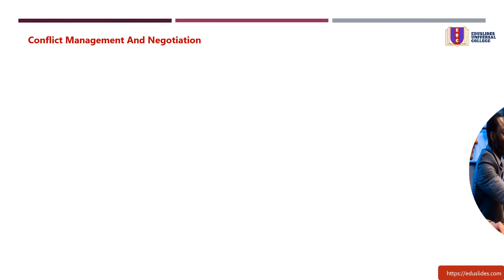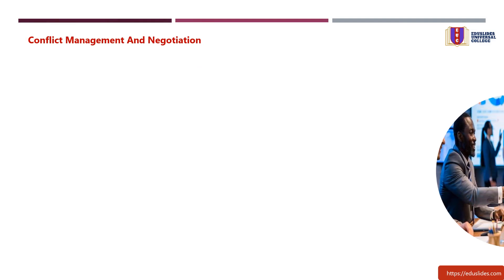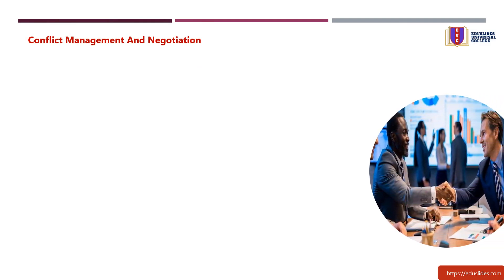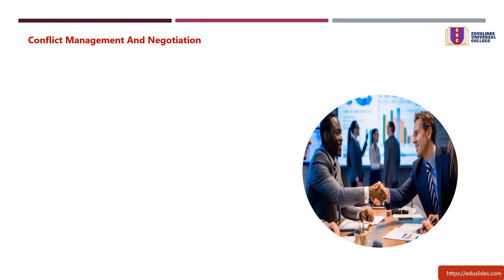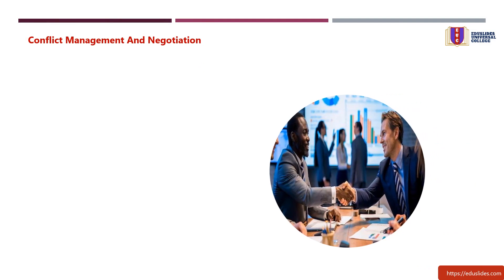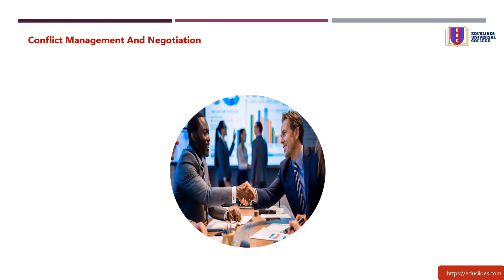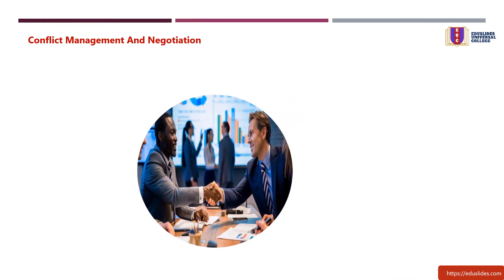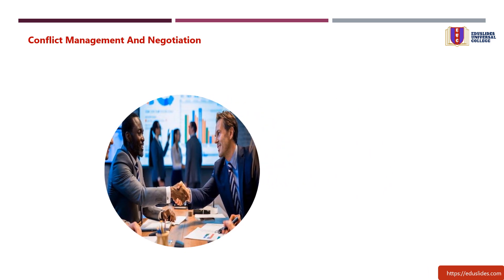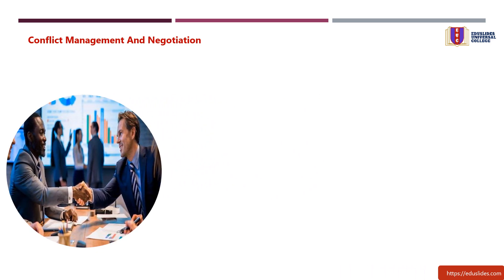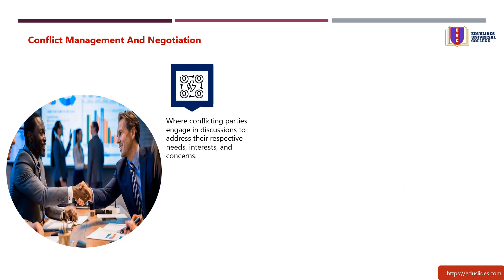What is conflict negotiation? Conflict negotiation is a dynamic process aimed at resolving disputes, differences, or disagreements between parties by finding common ground and reaching mutually acceptable solutions. It is a strategic form of communication where conflicting parties engage in discussions to address their respective needs, interests, and concerns.